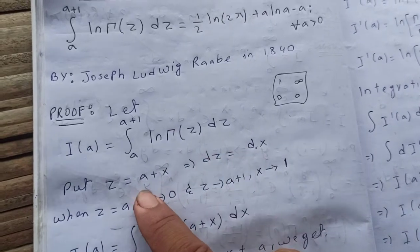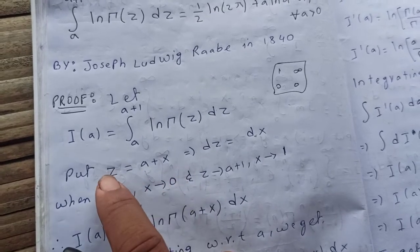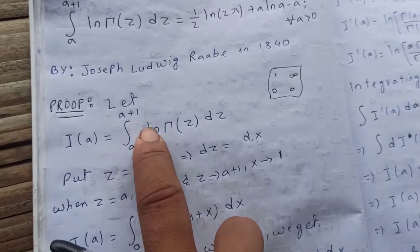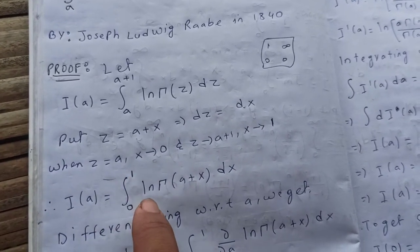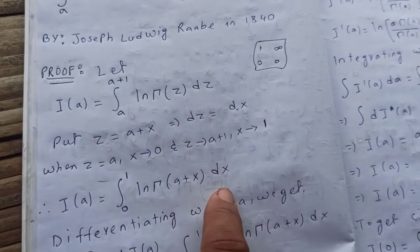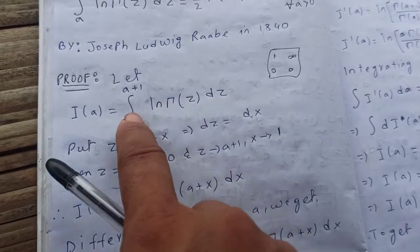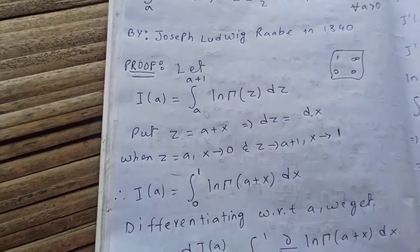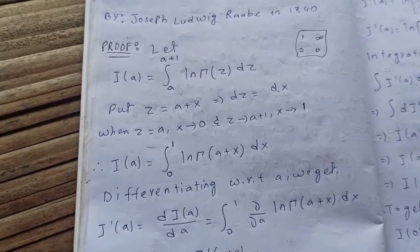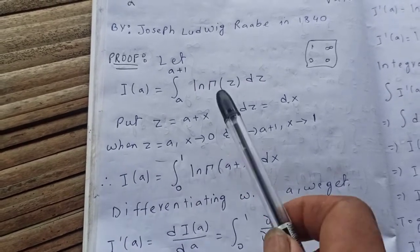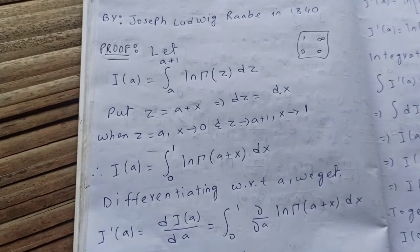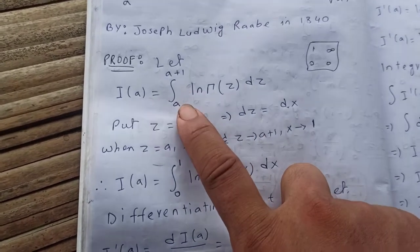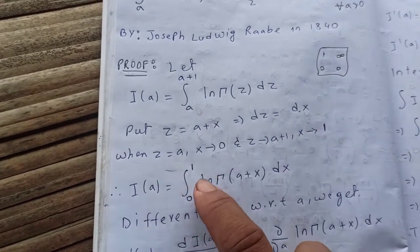Putting z equal to a plus x, so dz = dx and a is constant. When z equals a, x equals zero; when z equals a plus one, x equals one. So the integral turns to limits from zero to one. Therefore I(a) equals the integral from zero to one of log gamma(a plus x) dx. This substitution just changes the limits — the integrals are the same thing. Now zero to one is fixed.